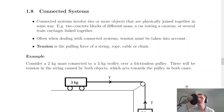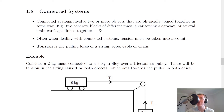Welcome back. In this video we're going to look at connected systems. This is something you wouldn't have seen at National 5 level. Connected systems involve two or more objects that are physically joined together in some way — for example, two concrete blocks of different mass, a car towing a caravan, or several train carriages linked together. These are typical examples you'll find in past papers.